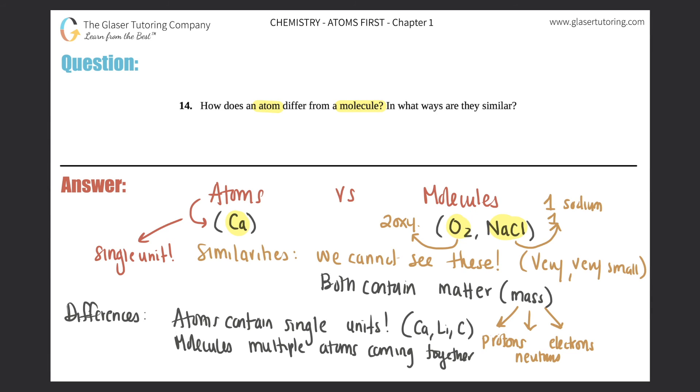But that's the difference: atoms are just a single unit, so a single calcium, a single oxygen, a single chlorine. Molecules will have multiple atoms coming together.